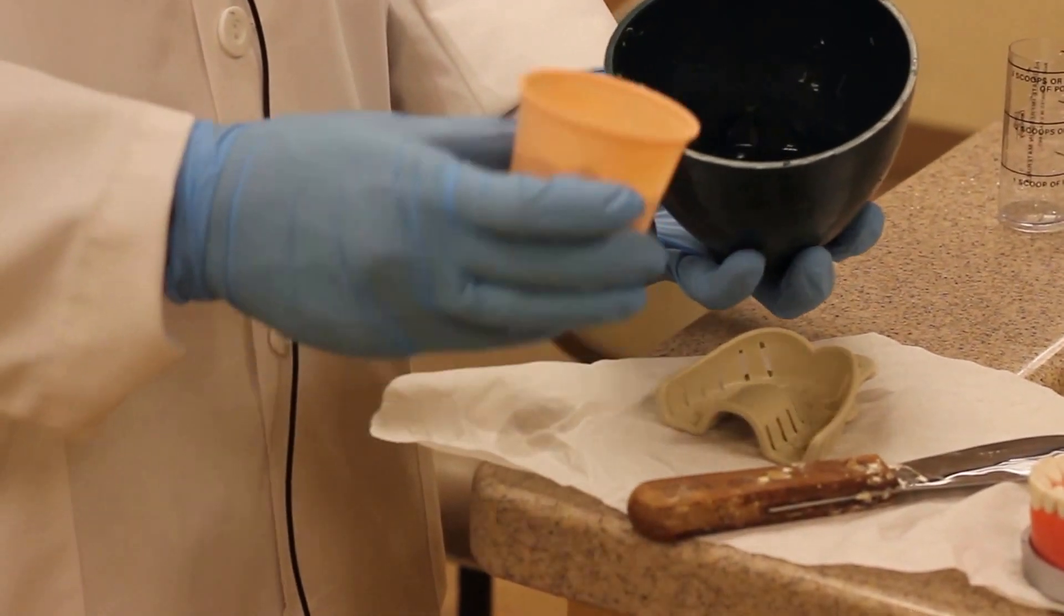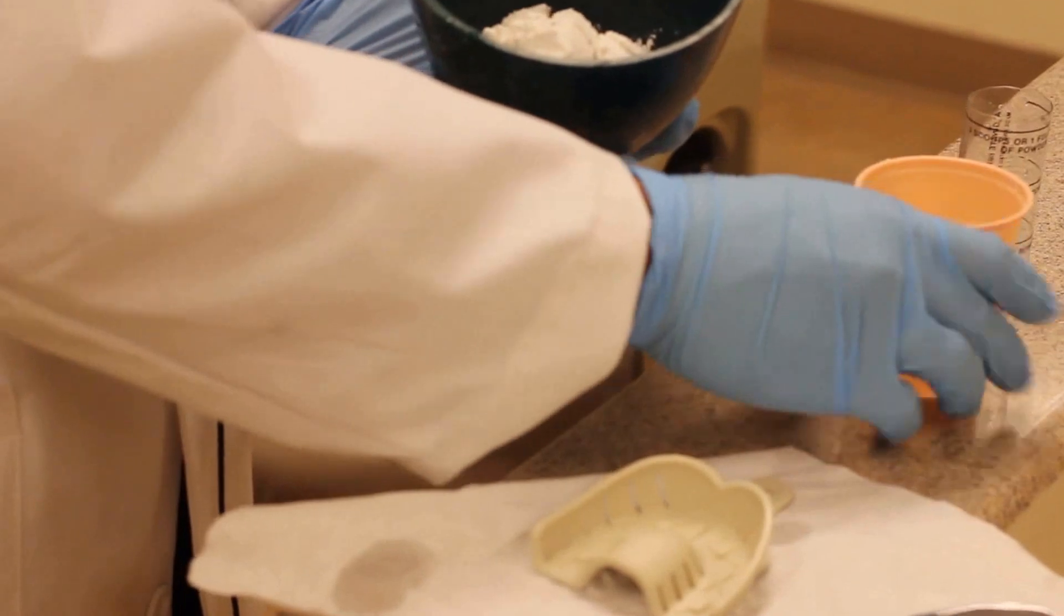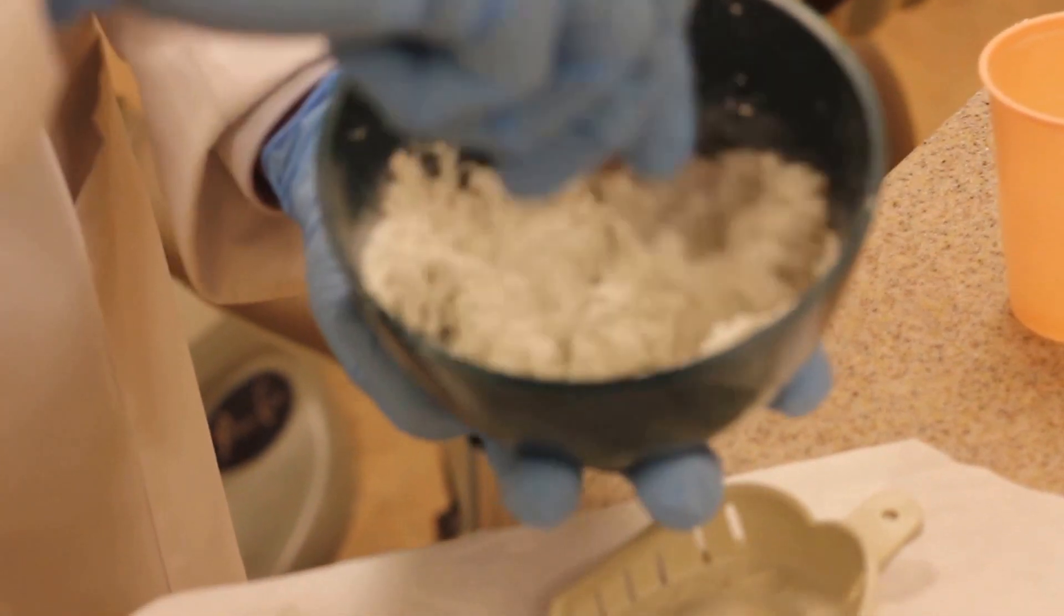Three scoops in a cup. You don't want to do it in reverse because it tends to clump a little bit more if you have the powder in first then you add the water.